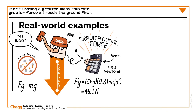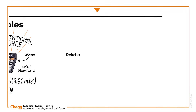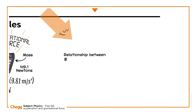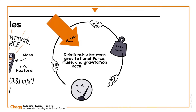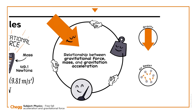We have learned about the relationship between gravitational force, mass and gravitational acceleration, and the difference between the motion of free-falling objects and objects under the dual influence of gravity and air resistance.